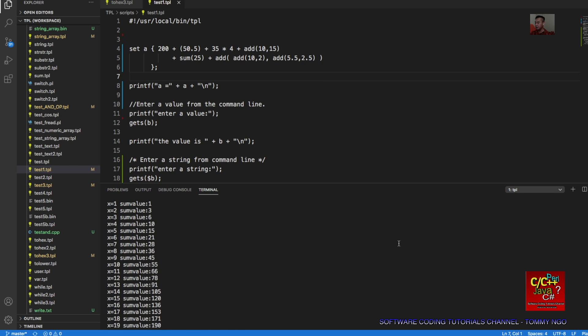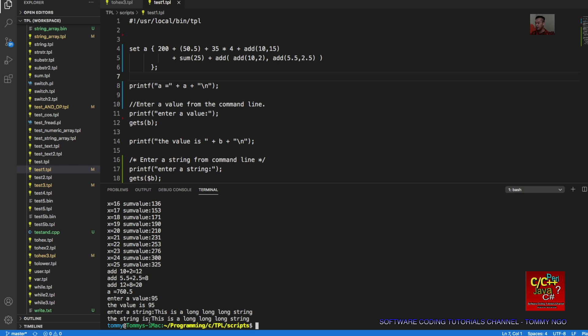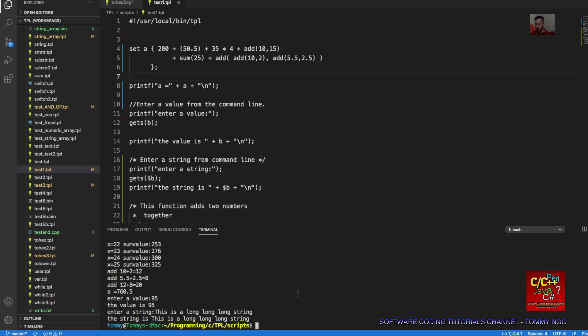You can see that it's executing, add 10 plus 15 is 25. There's a summation. Here's the sum value that's returned back. A finally becomes 760.5. I can enter a value, let's say 95. They ask me to enter a string and I enter, this is a long long string. It returns back, the string is: this is a long long string. That shows you some of the features in this scripting language I developed.